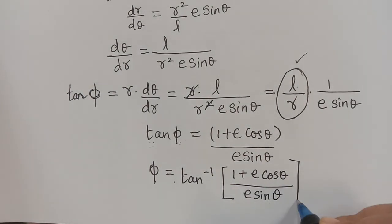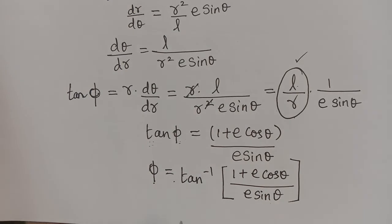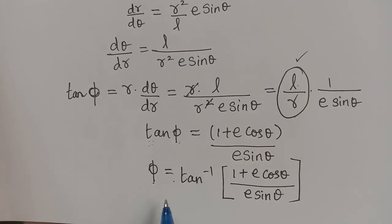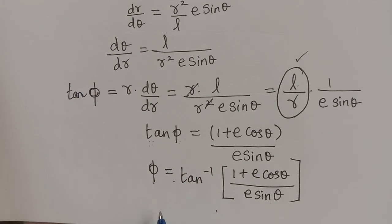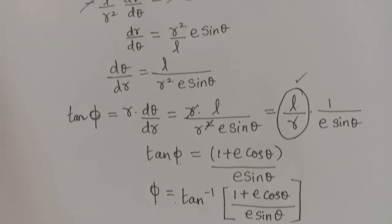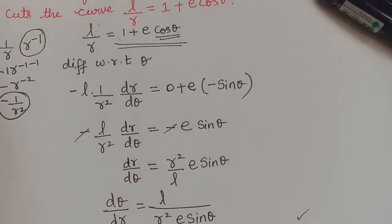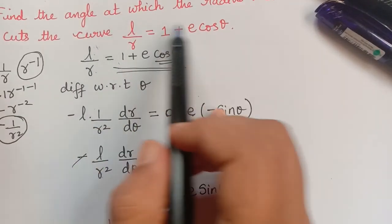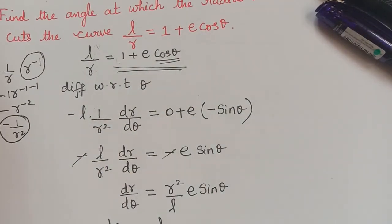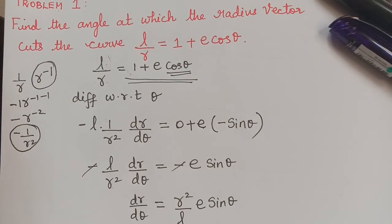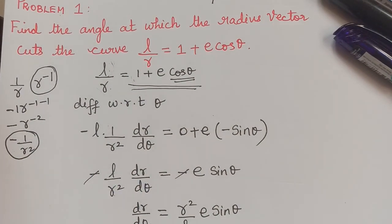Hence we have obtained the angle between the radius vector and the tangent, which gives us the angle at which the radius vector cuts the given curve. Hope you have understood this problem. We will see more similar problems in future videos. Thank you.